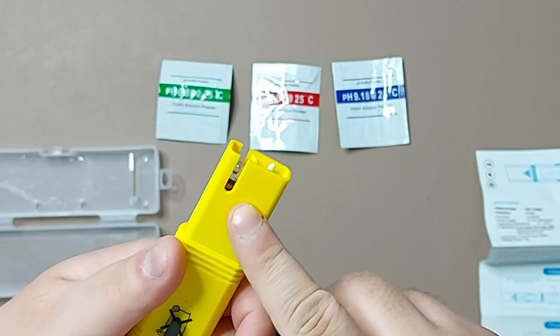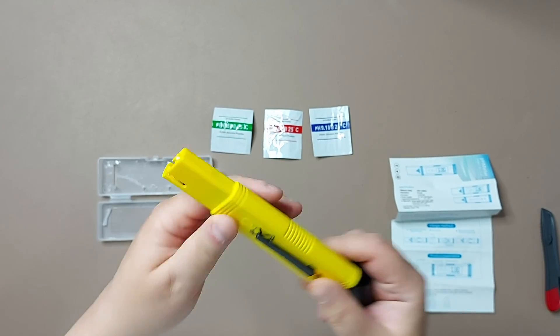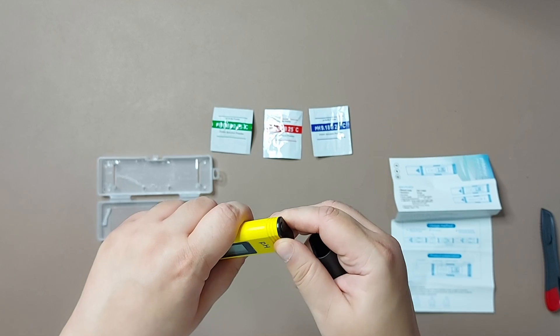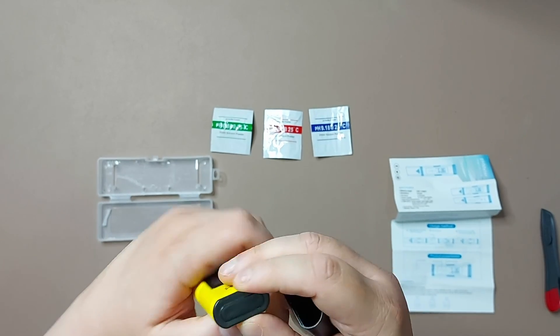The electrode is here - you will insert this into the water. And here is the battery compartment, so let's see how we can open it.